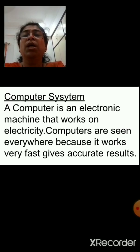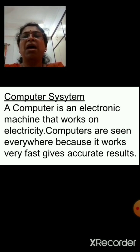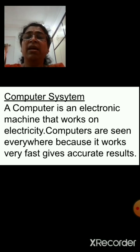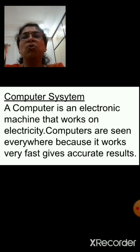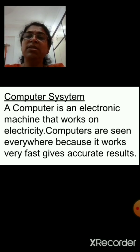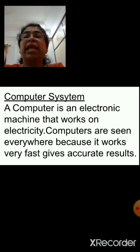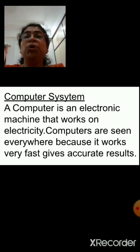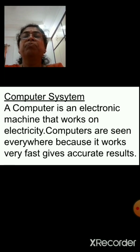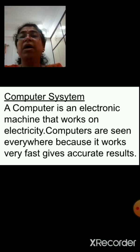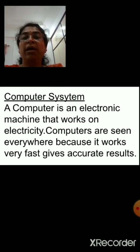But before that, can you tell me — is a computer a single unit machine? No. A computer has four different parts, and many other parts also. But basically it has four parts: keyboard, mouse, CPU, and monitor. All together this is called a computer system. All these parts — mouse, keyboard, and monitor — are attached to the CPU. CPU is called the brain of the computer. It gives accurate results quickly and does not require much time to do calculations. That is why it is called a smart machine and is used everywhere.